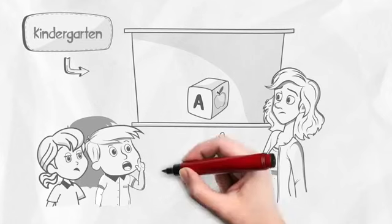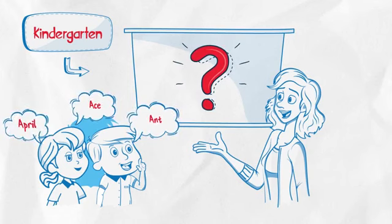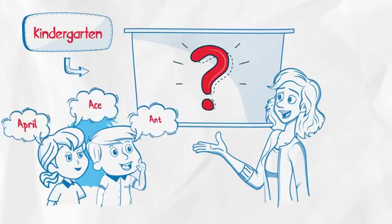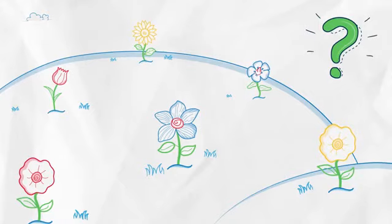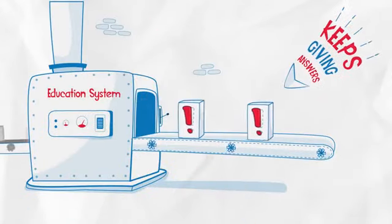Kindergarten lessons told us that A is for Apple. We asked you for words that start with A. Our education system gave us the answers. We asked you a question. Answers make you the same. Questions make you different. Right from kindergarten, the education system keeps giving answers.